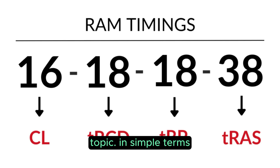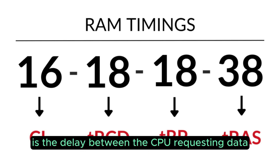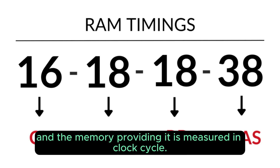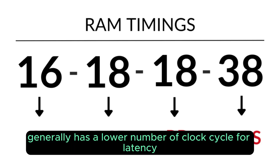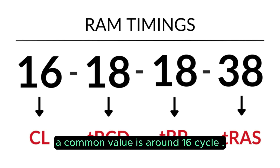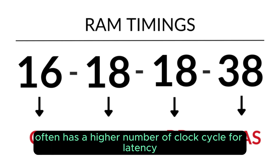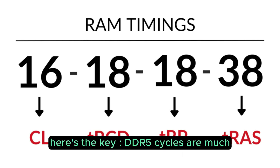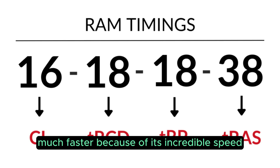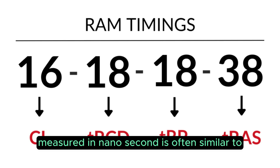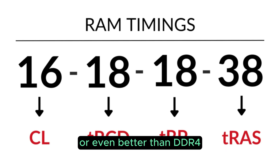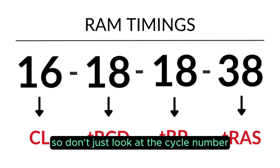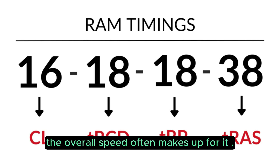Latency is a trickier topic. In simple terms, it is the delay between the CPU requesting data and the memory providing it, measured in clock cycles. DDR4 generally has a lower number of clock cycles for latency — a common value is around 16 cycles. DDR5 often has a higher number of clock cycles for latency, like 36 or 40. However, DDR5 cycles are much faster, so the real-world delay measured in nanoseconds is often similar to or even better than DDR4. Don't just look at the cycle number; the overall speed often compensates for it.